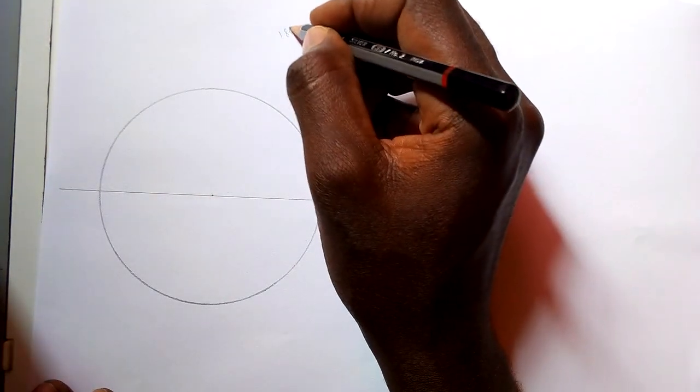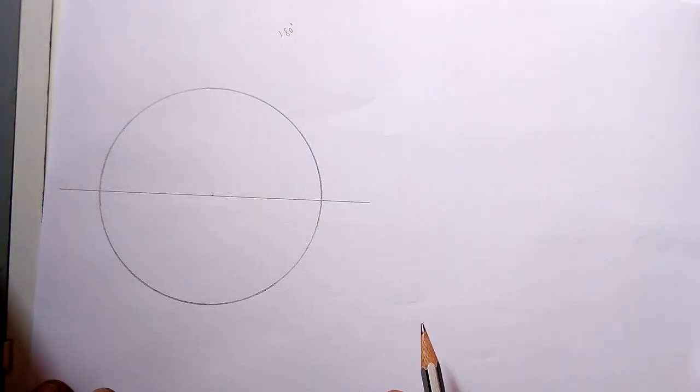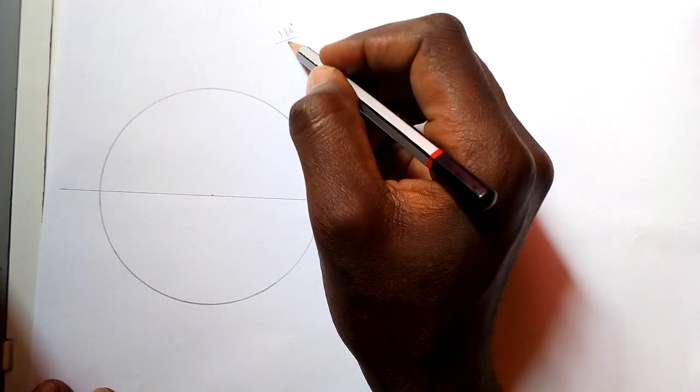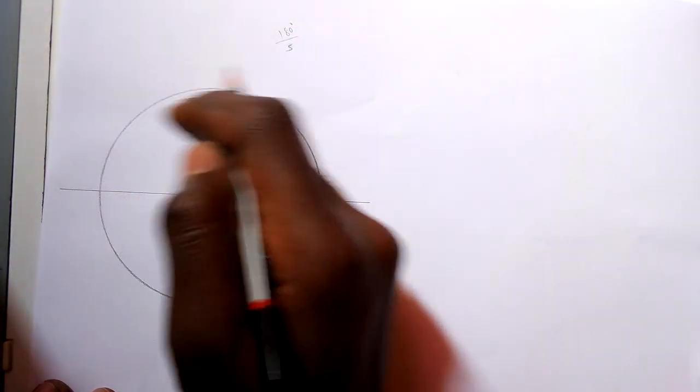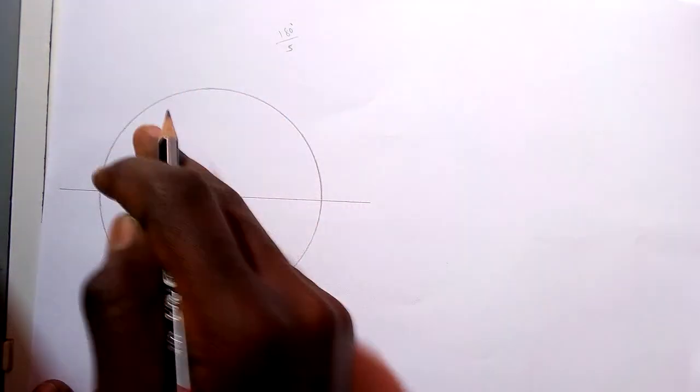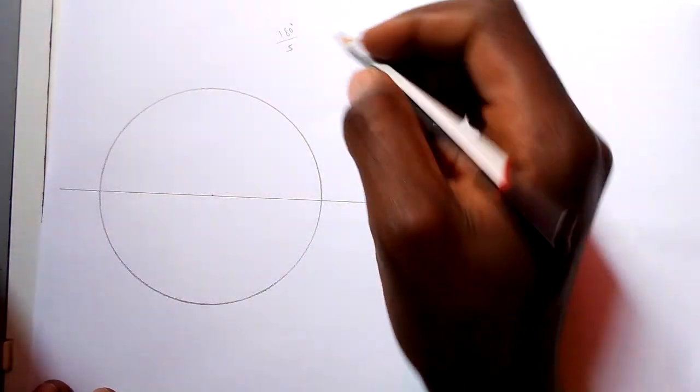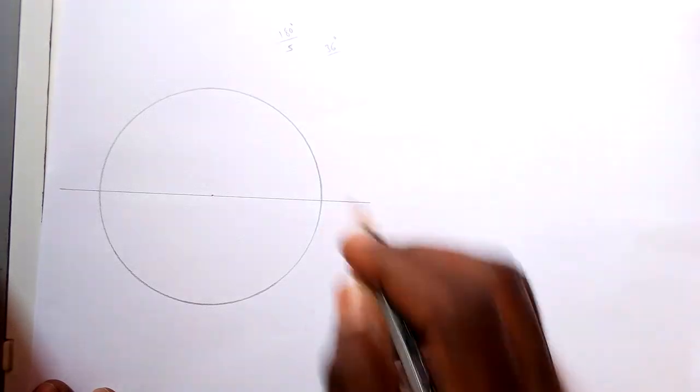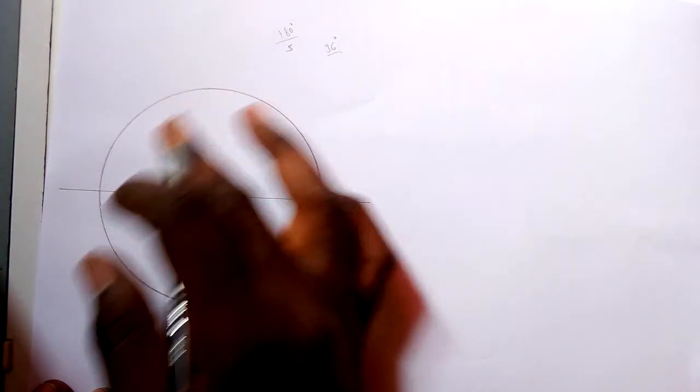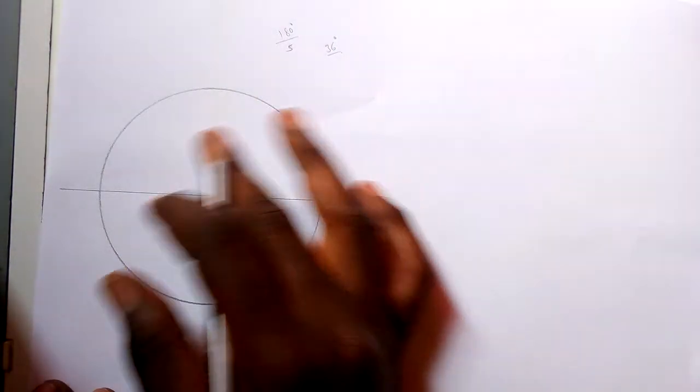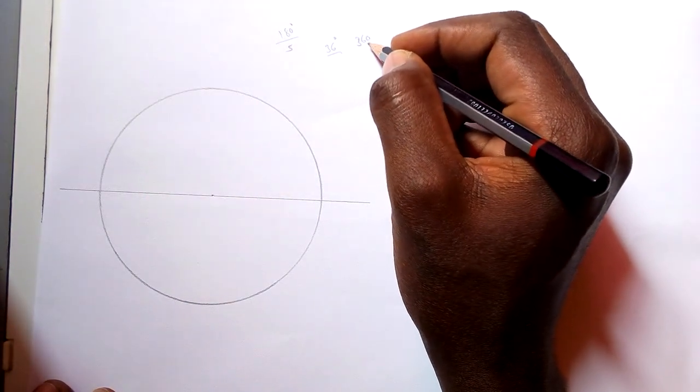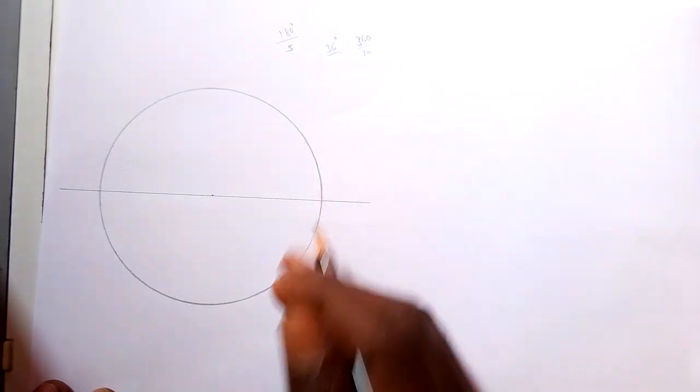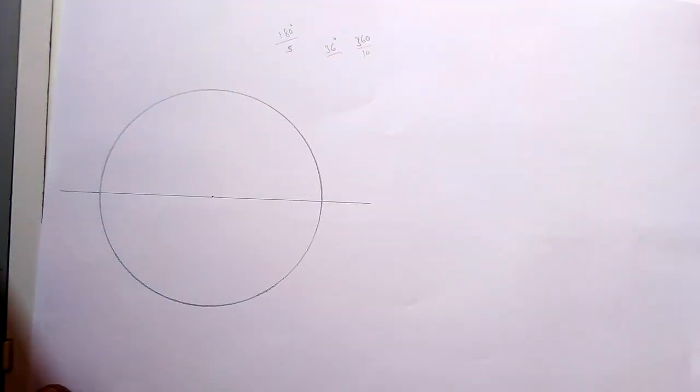So you can divide it into five—that's because we are dividing this upper semicircle into five parts. So you can get 36 degrees. Or if you want to divide the whole circle, it means that you can take 360 and divide by 10, so you can get 36 degrees.